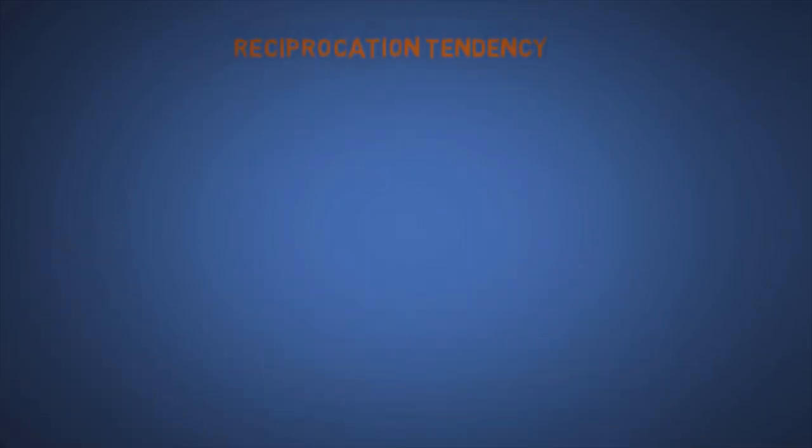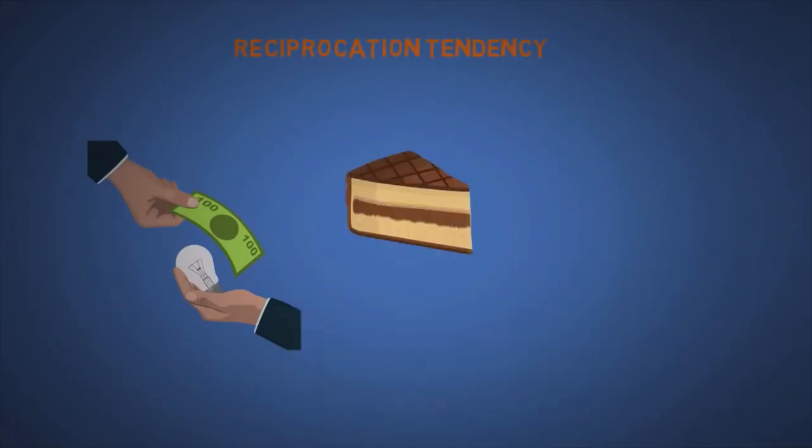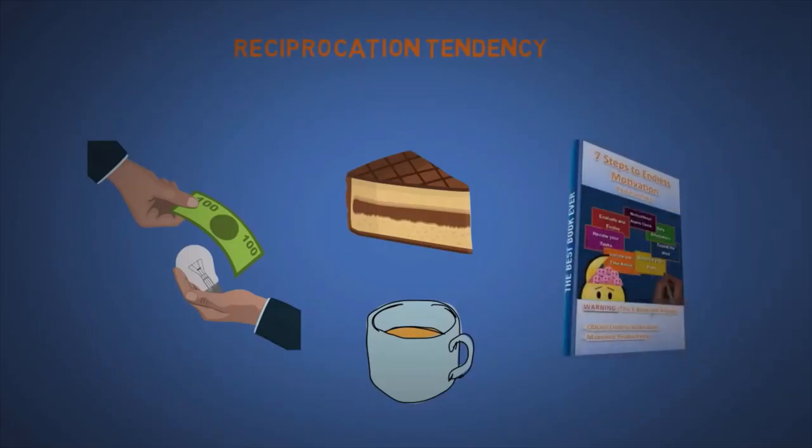The ninth is reciprocation tendency, which is related to the seventh. We tend to want to return the favor when someone gives us something or helps us out. This is why some supermarkets offer free samples, or why car salesmen might offer free coffee. But it is not why my ebook is free. I'm just nice.